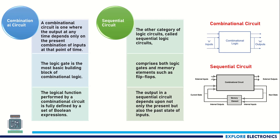Coming to logic circuits, there are two types. We need to understand the difference between a combinational logic circuit and a sequential logic circuit. As mentioned earlier, a combinational circuit is one where the output depends only on the present inputs. In a sequential circuit, the output also depends on the previous outputs. As shown in the diagram, in a sequential circuit there is a memory element, and the output is fed back as input to the combinational circuit. In a combinational circuit, you can see only logic gates within the combinational logic block.